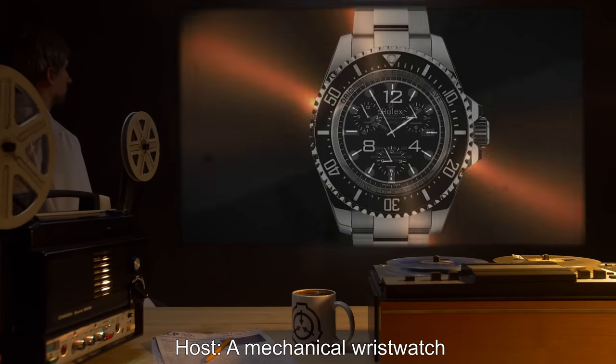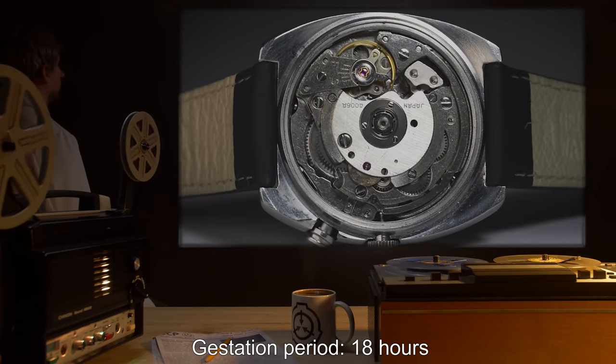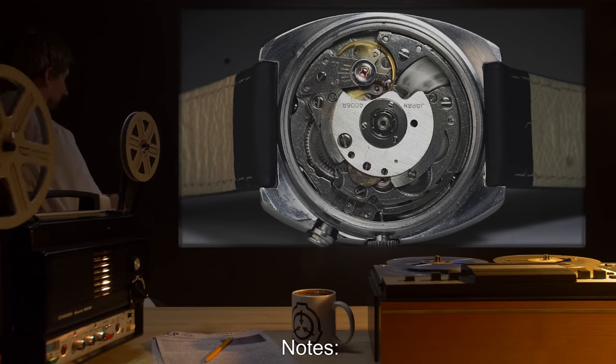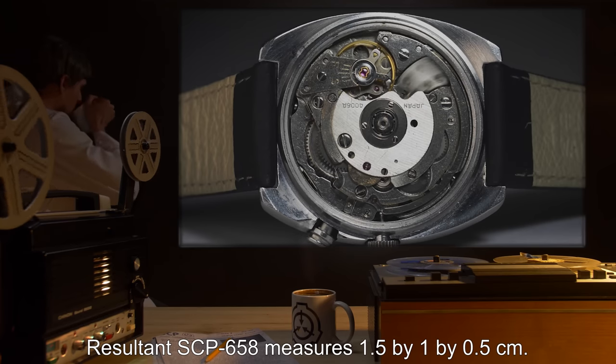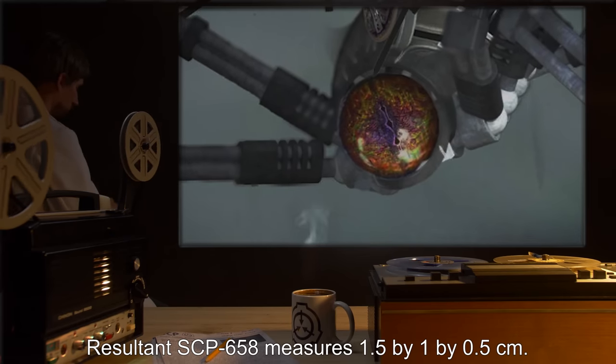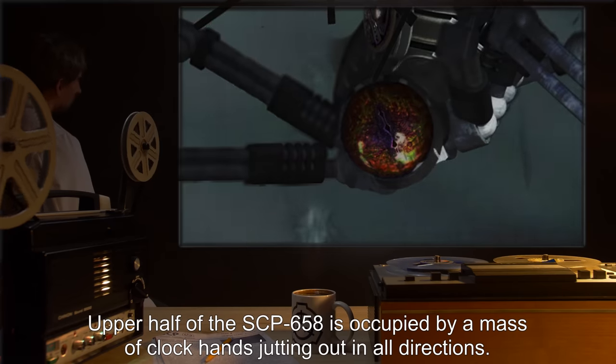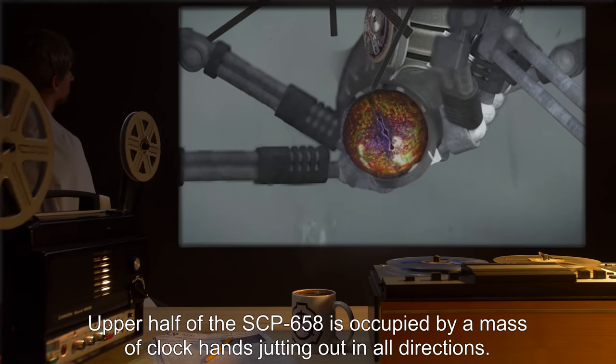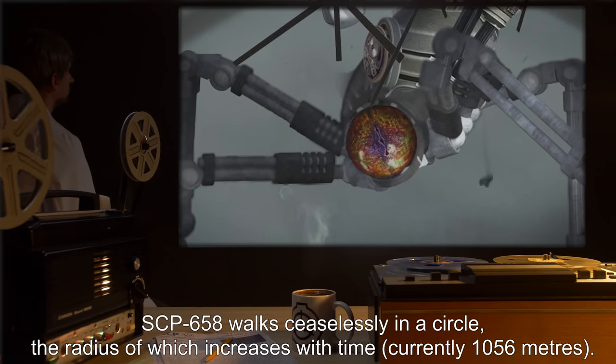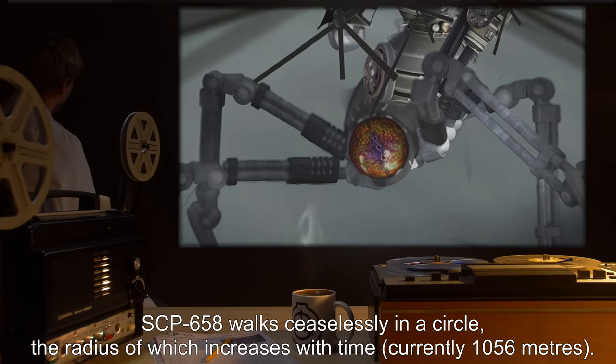Host: A Mechanical Wrist Watch. Gestation Period: 18 Hours. Notes: Resultant SCP-658 measures 1.5 by 1 by 0.5 centimeters. Upper half of the SCP-658 is occupied by a mass of clock hands, jutting out in all directions.